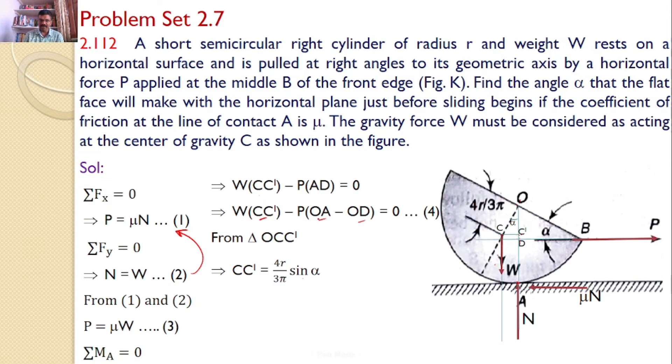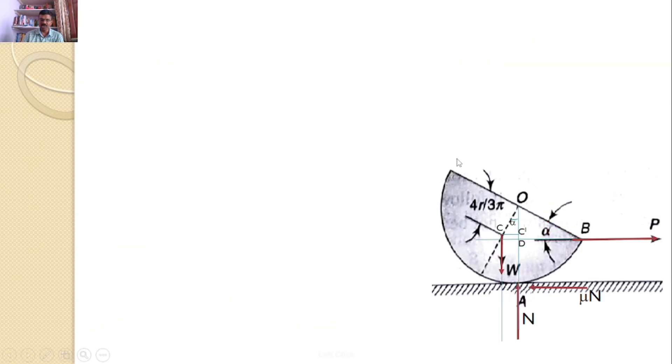Similarly, I would like to find the value OA and OD. OA is nothing but the radius because it is passing through the center. So OA becomes r. And I would also like to find the value OD. For that, I will consider right angle triangle OBD. In this OBD right angle triangle, OB value becomes r radius. And this angle is α, so from that I can find OD = r sin α. And OA value is r. So CC', OA, OD all values are known.